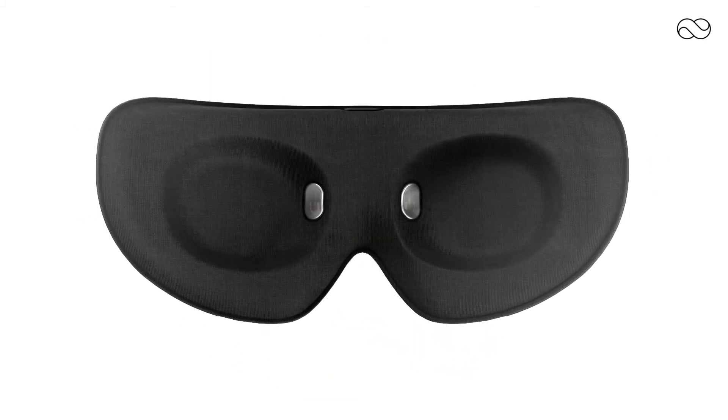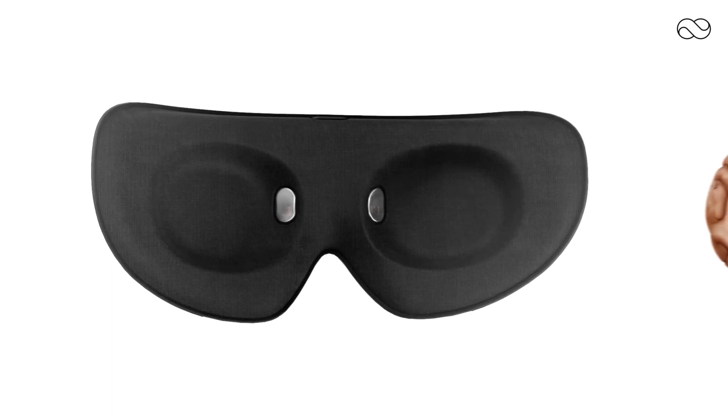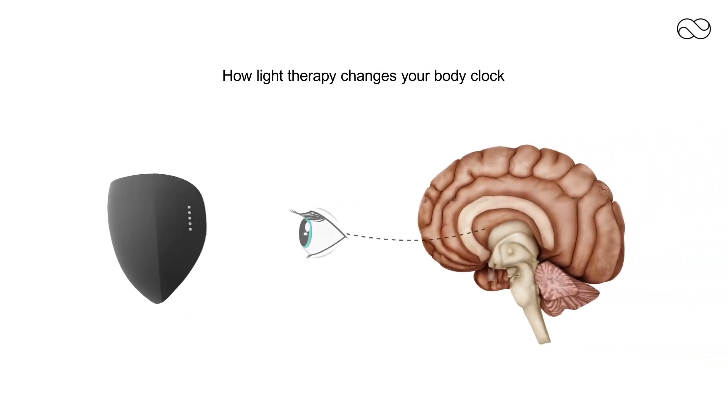The Lumos Mask emits short, barely noticeable light pulses, stimulating the same neurological pathway as sunlight. When worn during your regular sleep schedule, Lumos will shift your body clock to the new time zone by passing signals to the suprachiasmatic nucleus. This is the part of the brain responsible for regulating your body clock.